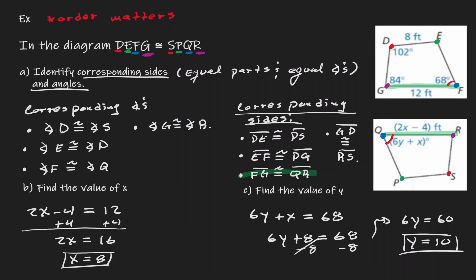So notice how important it is to identify congruent sides and congruent angles — also known as corresponding sides and corresponding angles — because once you have them, you can set equations equal to each other.